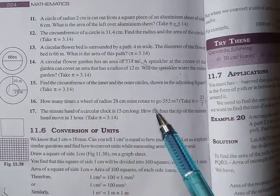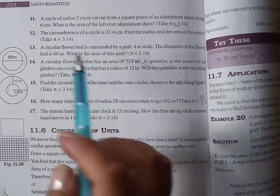The aluminum sheet is square shape. The square shape of the side is 6 cm.